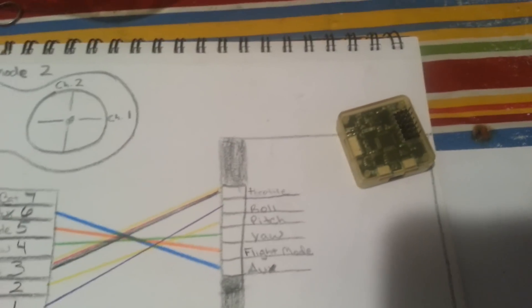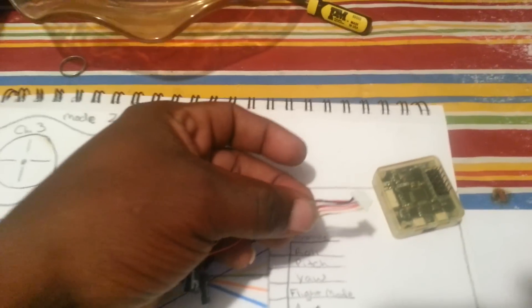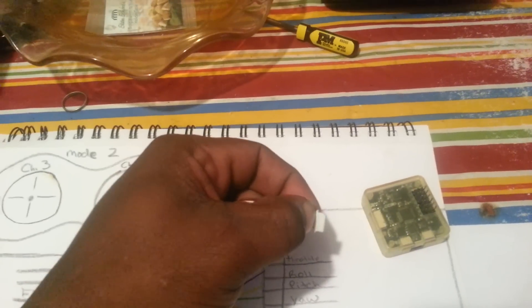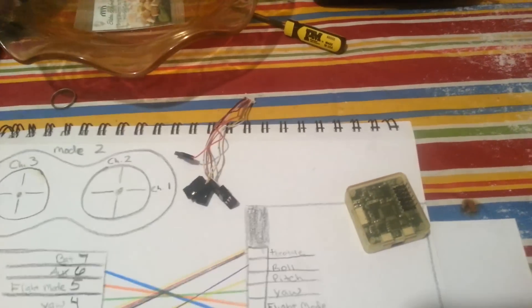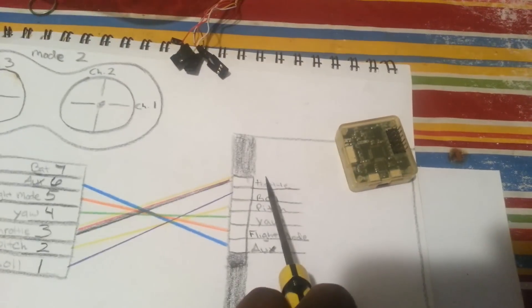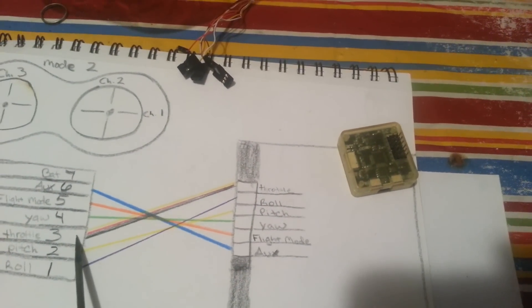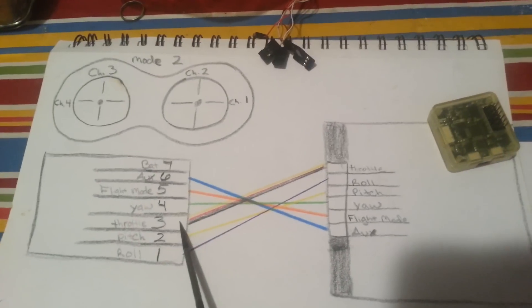So basically, what you want to do, take your pin for your PWM, starting with the throttle at top, and basically just connect, where'd it go, connect channel for channel. That simple.